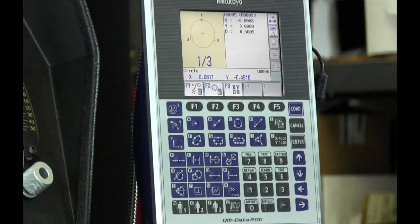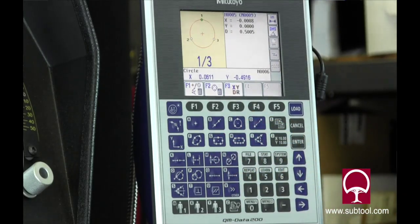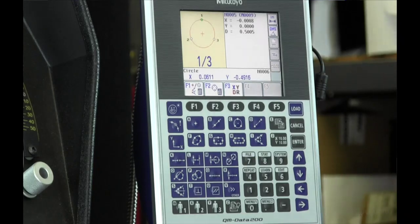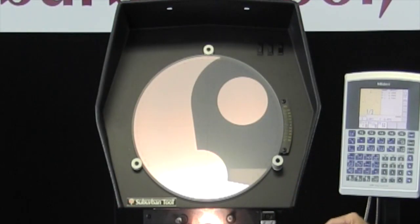Most of the functions are canned. You've got circle, slot, square, angle. Those are all canned functions. You don't have to do a lot of button pushing to get your measurements. So we're going to take a couple quick, simple measurements here, just to show you how easy it is.